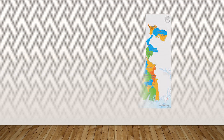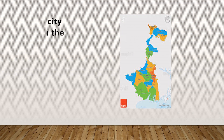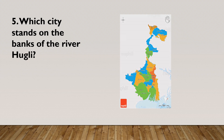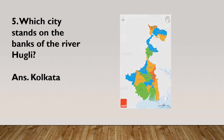Now, children, see this map and answer the question. Which city stands on the banks of the river Hooghly? That is Kolkata, and Kolkata is the capital of West Bengal. West Bengal has 19 districts. You can see the longest bridge here — that is Vidya Sagar Setu. The language spoken here is Bengali, Hindi, and Urdu. The state animal is fishing cat, state bird is white-breasted kingfisher, state flower is jasmine, and state tree is devil tree.